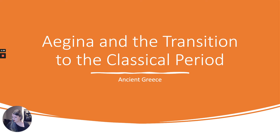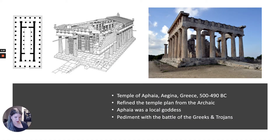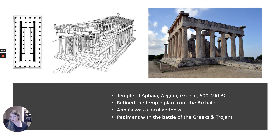So here's where we're going to pick up — Aegina and the transition to the classical period. This is sort of the transition between the archaic and going into the early classical. The first thing we're going to look at is the Temple of Aphaea, located in Aegina, Greece, built between 500 and 490 BC. Let's orient ourselves historically as we go into this period.